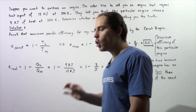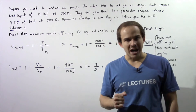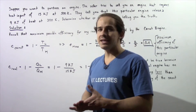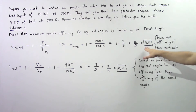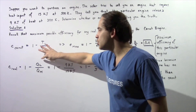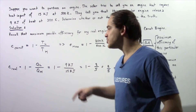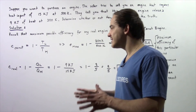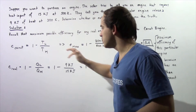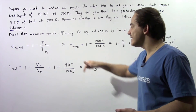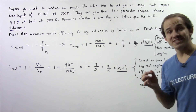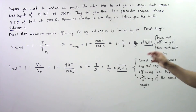Carnot's engine doesn't actually exist because reversible processes don't exist. So whatever the efficiency of the heat engine the seller is trying to sell is, it must be less than this value. The efficiency of the real engine is equal to 1 minus QL divided by QH, where QH is the heat required by the engine and QL is the heat released. Here QH is 15 kilojoules and QL is 9 kilojoules, so 1 minus 9/15, or equivalently 1 minus 3/5, equals 2/5. So our efficiency E is 0.4.